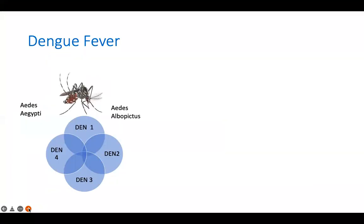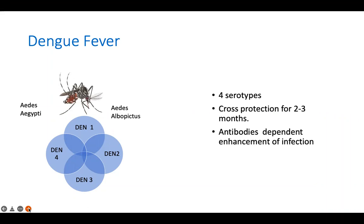Dengue is caused by the dengue virus, which has four serotypes. The most common vector is Aedes aegypti, which is a daytime biting mosquito.